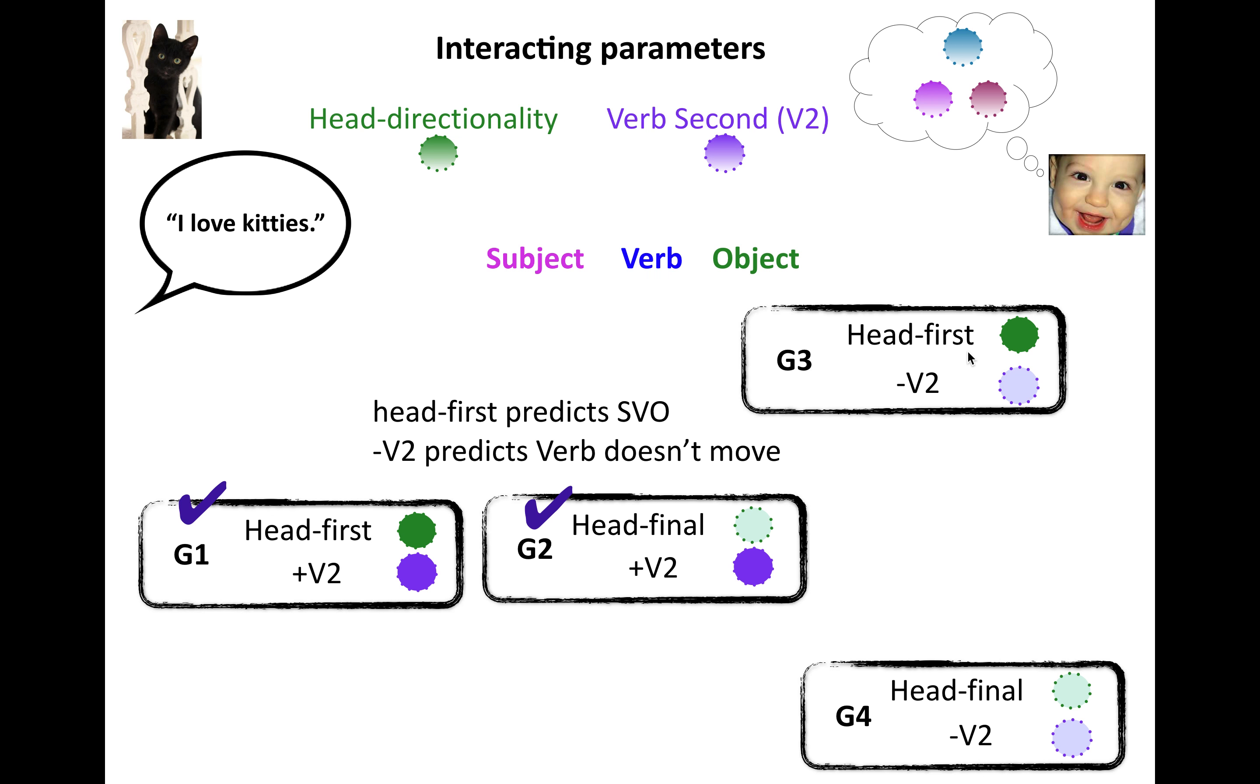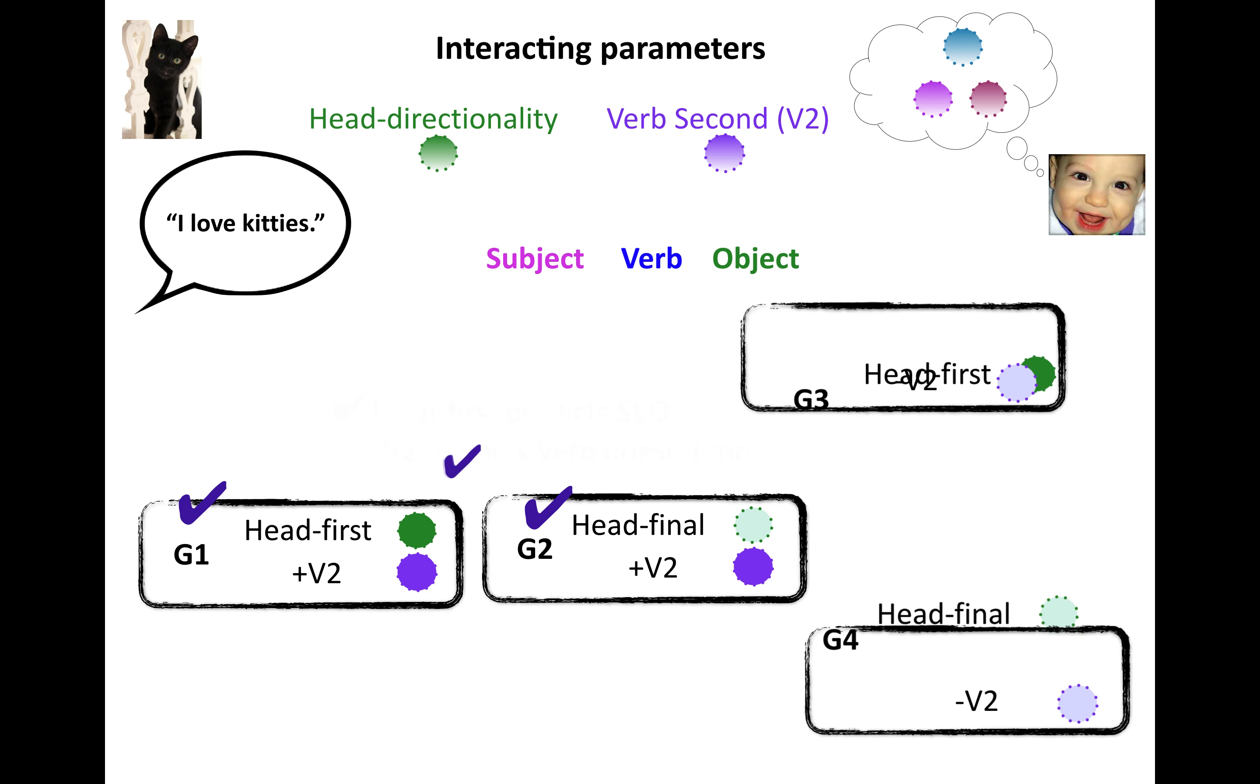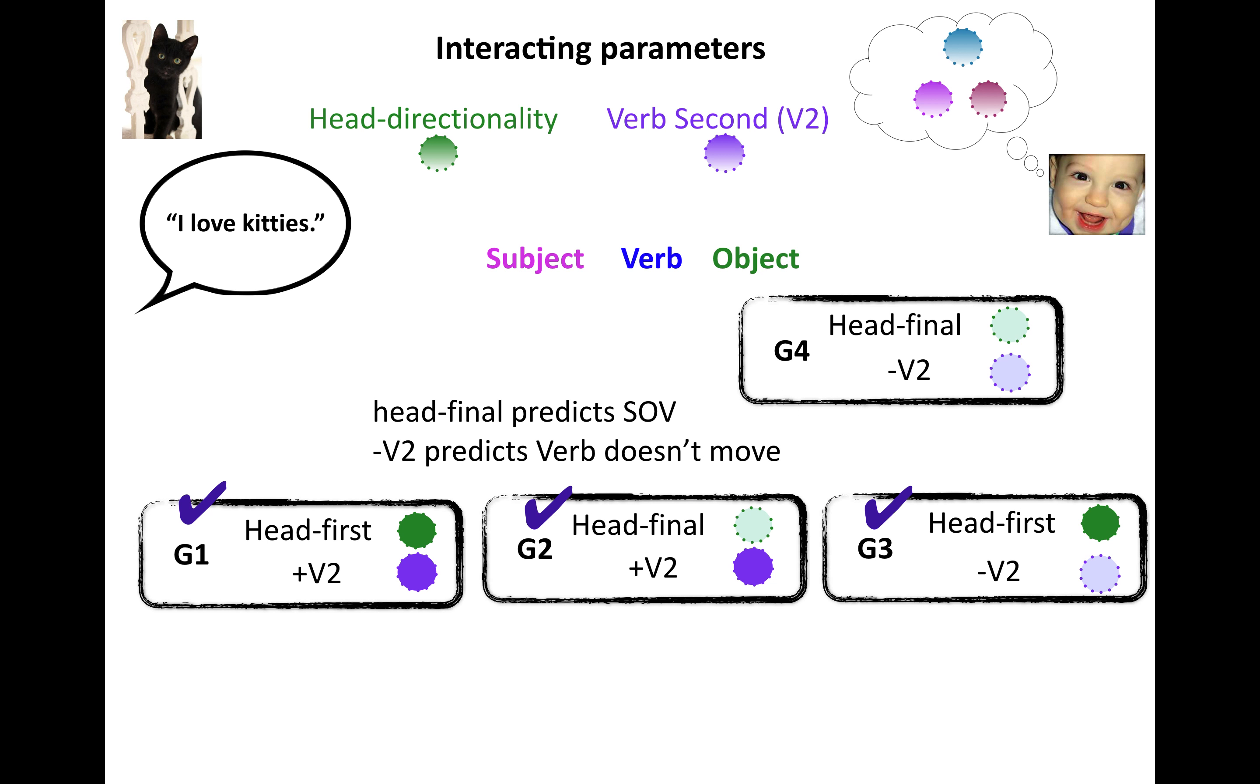Okay, what about this grammar? So this says that we want to have head first, we want to have a verb before the object, and we don't want to move the verb at all. What you see is what you get. So that's fine because this is what we would predict. So head first predicts subject, verb, object. Minus V2 means we don't move our verb. That's fine. That's compatible. So grammar three is compatible.